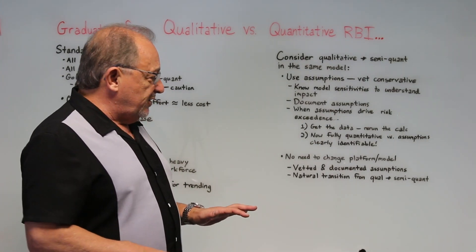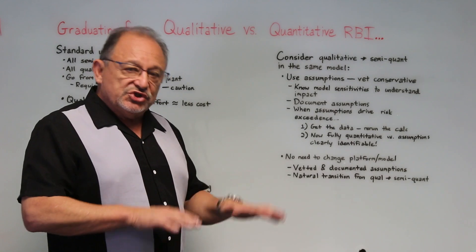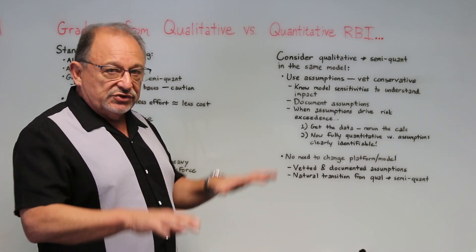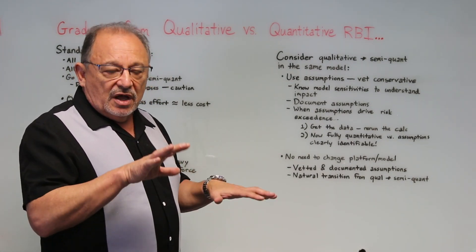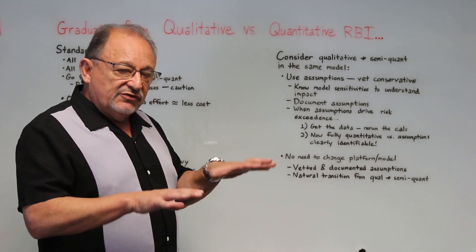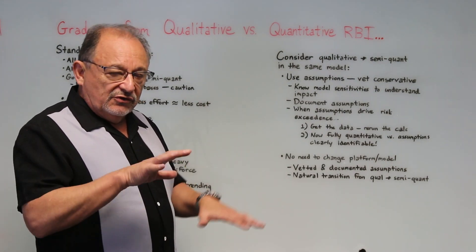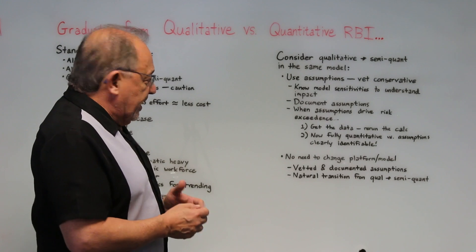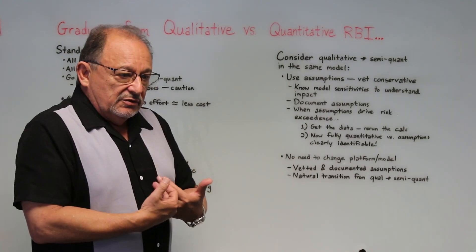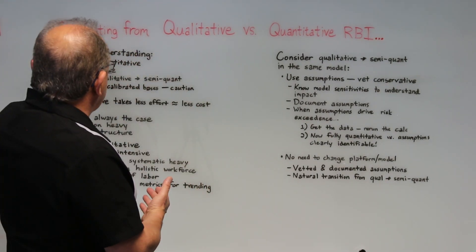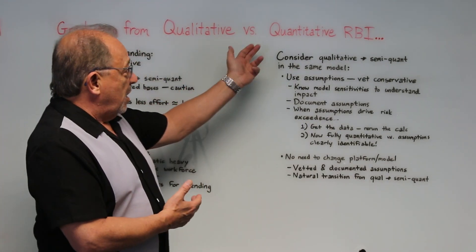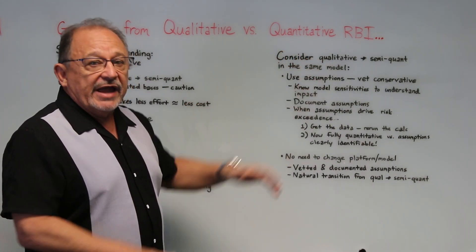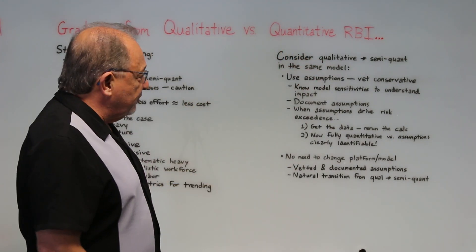You avoid the confusion that can occur — especially with management — when trying to compare two different risk results in two different risk matrices. Everything is in the same platform. You just graduate things up, graduating from qualitative to more quantitative RBI, all within the same platform.